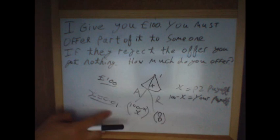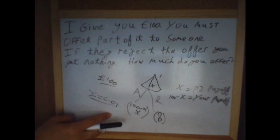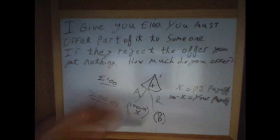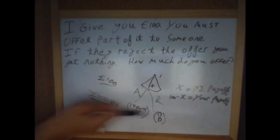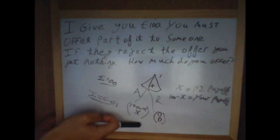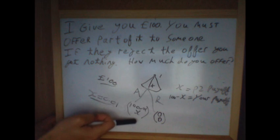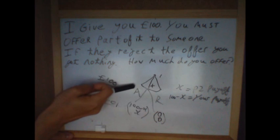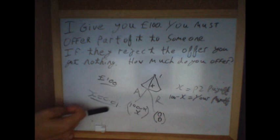This conclusion — that the offer you should give is one pence — is what's known as the sub-game perfect Nash equilibrium, or alternatively the backwards induction equilibrium, because we solved the game working backwards. We found player two's best response — accepting so long as x is greater than zero — and given that, you decide to offer 0.01.